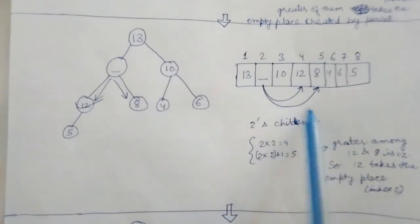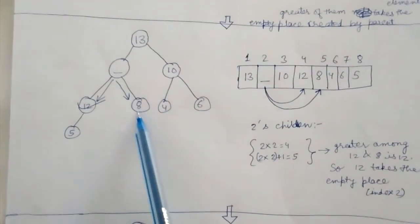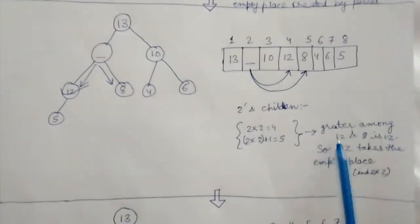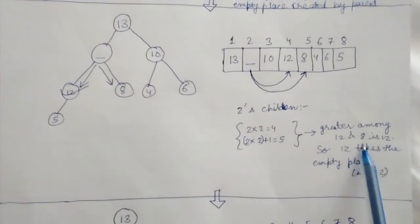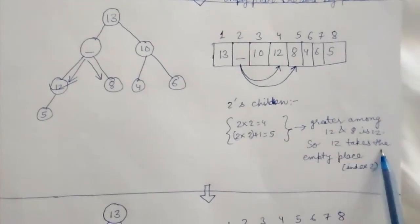These are the two children. The greater among the two children, 12 and 8, is 12. So 12 takes the empty place.